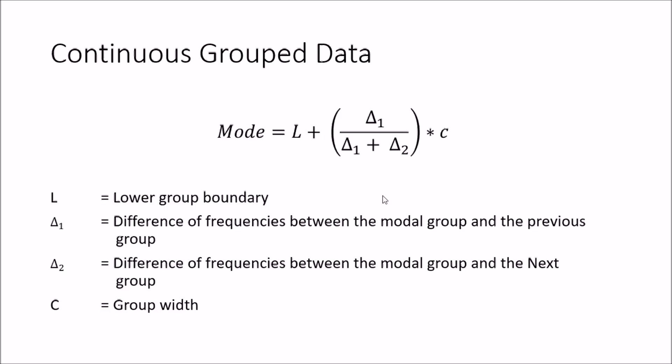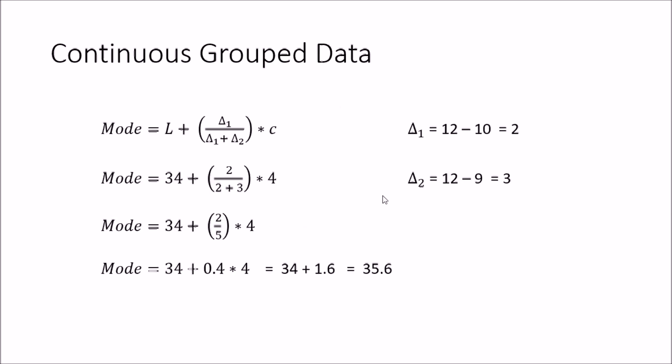Substituting the values: L is 34, Δ1 is 2, Δ2 is 3, and C is 4. That gives us 34 + (2 / (2 + 3)) × 4, which equals 34 + 1.6, giving a mode of 35.6. So we have now covered the basic central tendencies — mean, median, and mode. In the next tutorial we will move on to spread measurements and how to measure them.